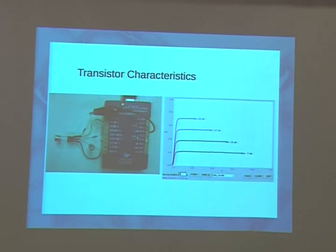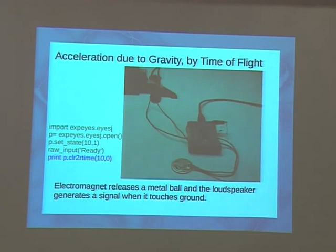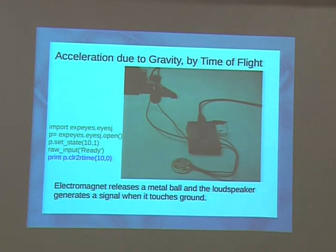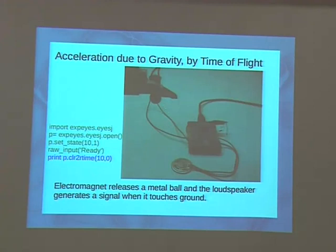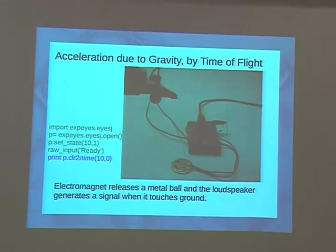Another experiment is transistor characteristics. You can also measure gravity: there's an electromagnet holding a small mild steel piece, a voltage output controls a relay to drop it, software controls the drop, when it hits the ground it disturbs a loudspeaker and generates a signal. You measure the time of flight — the time from when voltage goes to zero to when the signal arrives — and since you know the height, you can easily calculate g.